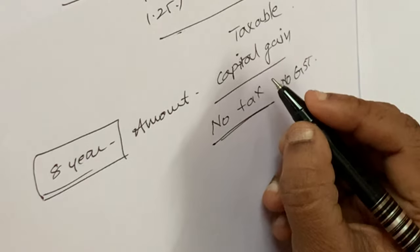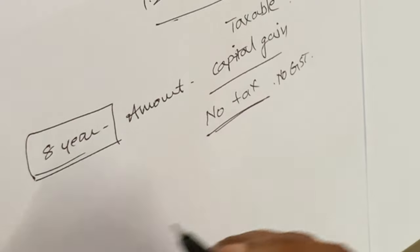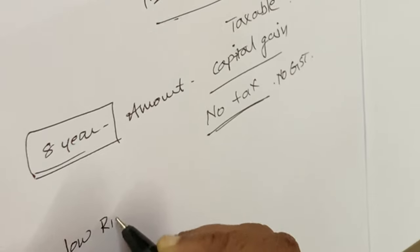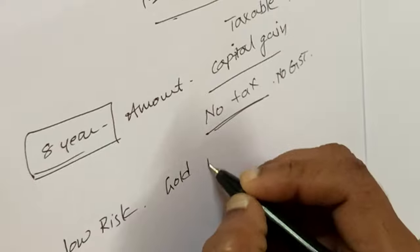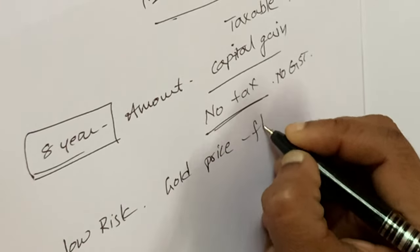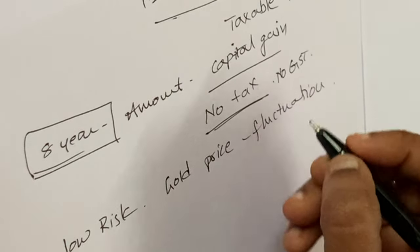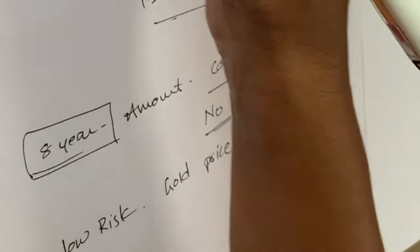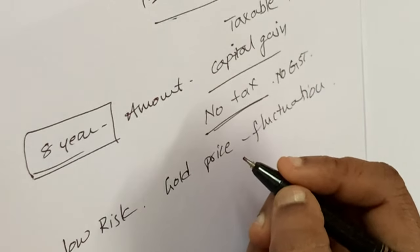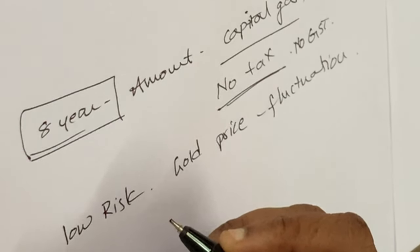There is no GST and no tax on capital gains from this scheme. This is a Government of India scheme, so there is very low risk. If there are fluctuations in the gold price, there is some price risk, but overall the Sovereign Gold Bond Scheme is low risk because it is government-backed.